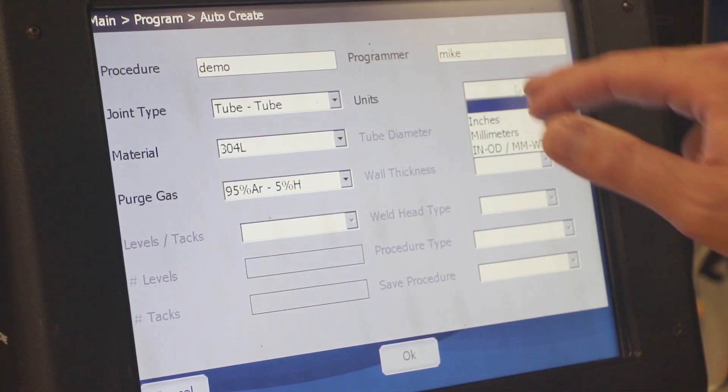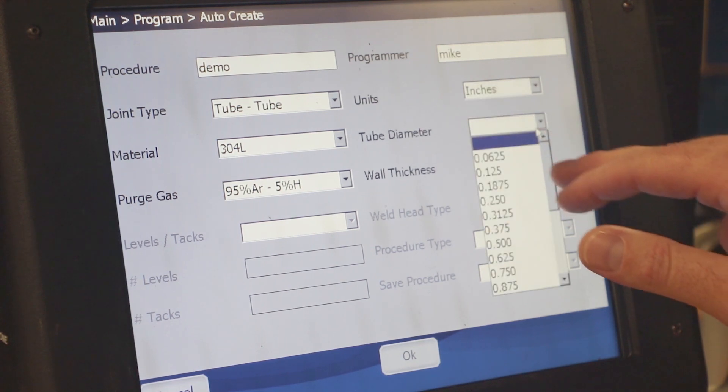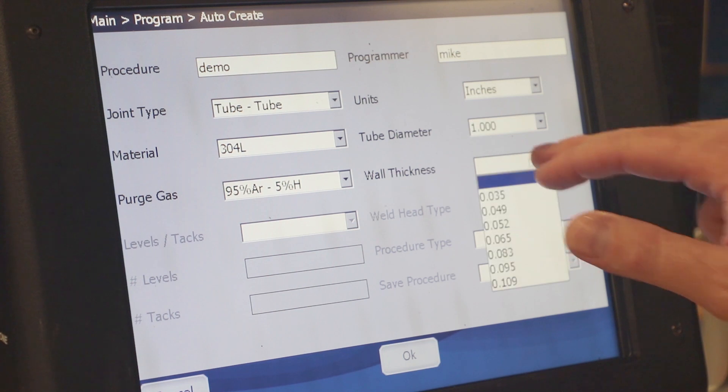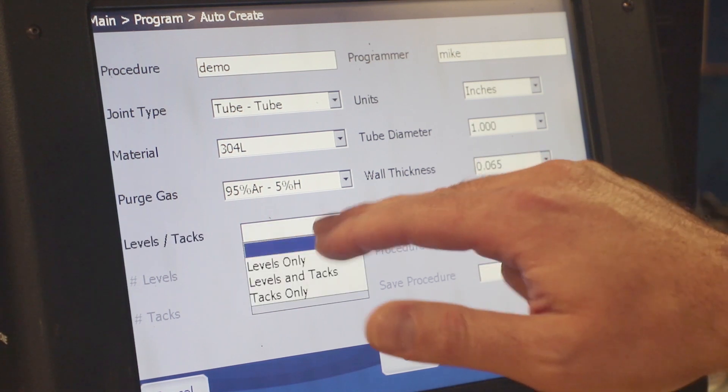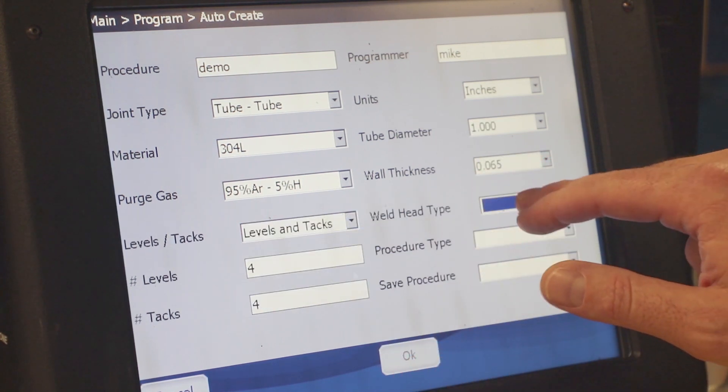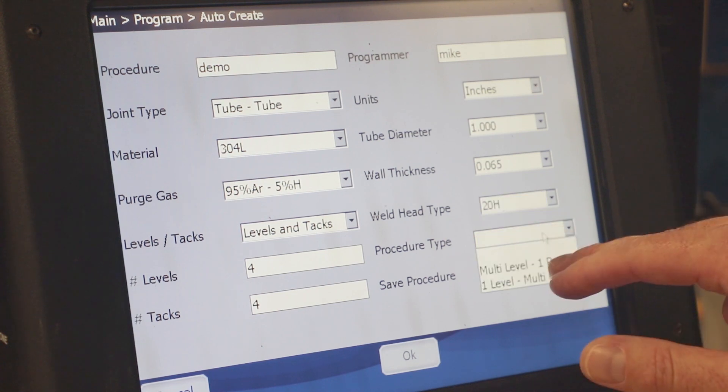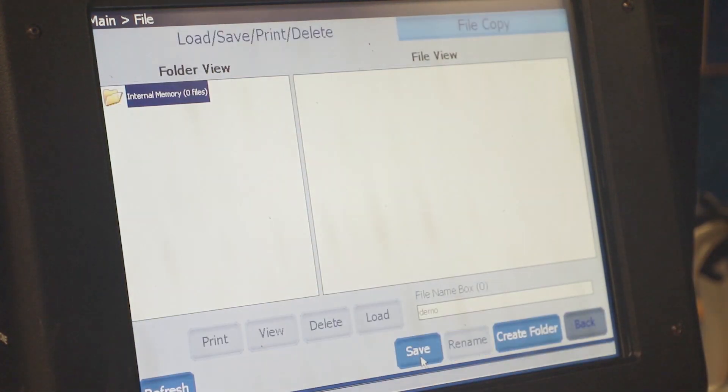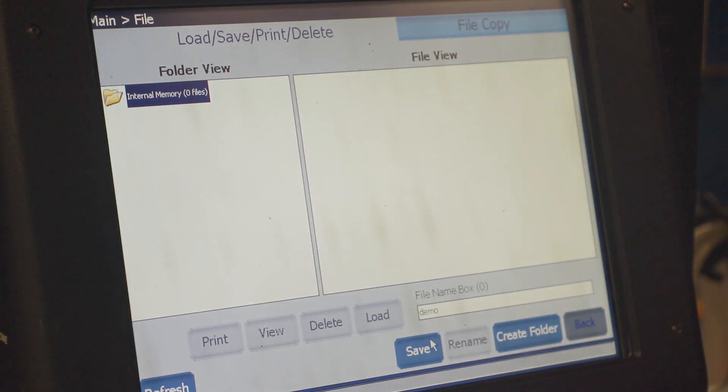Everything else is based on a drop-down menu determined by what material you're working with, what purge gas you have, and what type of joint you want to make. It's really straightforward and easy for a user to leverage all that Swagelok's learned about orbital welding, because all that knowledge is in the equipment and auto create makes it really easy to access.